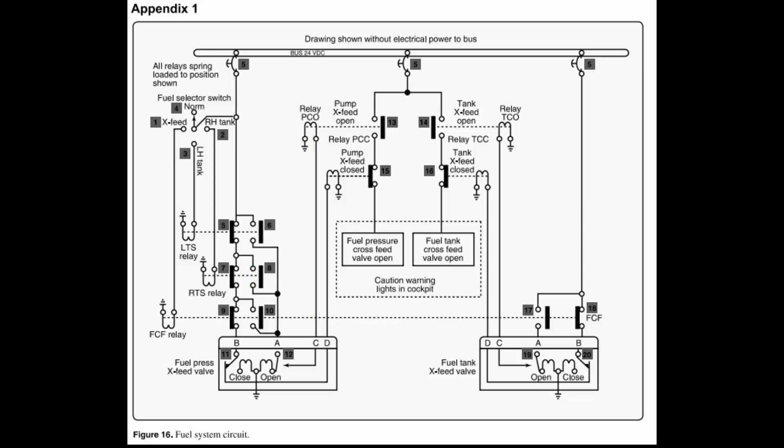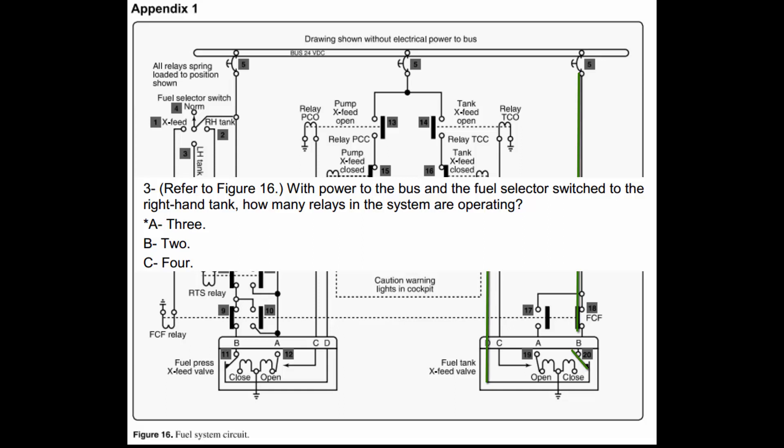The third relay is over here in the right-most area. You can trace all this stuff out and you'll run into a bunch of dead ends. Power is always being applied down this wire to contact 18. Contact 18 is opened and closed by the fuel cross-feed relay, but this is its normal state — in the relaxed state, power goes across the contacts at 18 to pin B. Once this valve is closed all the way, the limit switch flips over and puts power to pin D, which goes up to the tank cross-feed closed relay — that is our third relay. So the answer to question three is A: three relays in the system are operating.